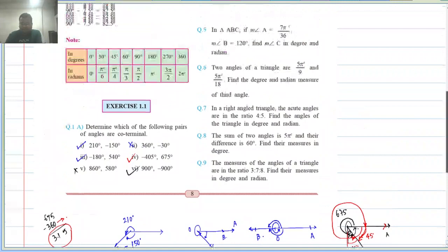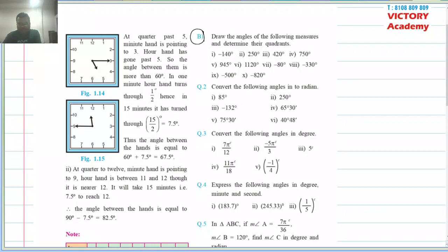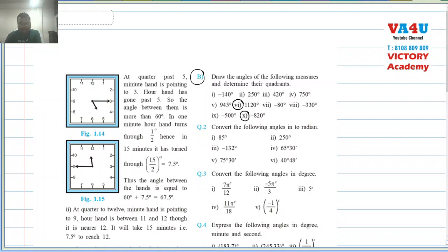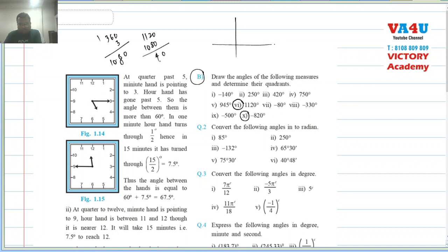Now let us do question B: draw the angles and determine the quadrant. For 1120 degrees: 360 × 3 = 1080, and 1120 minus 1080 = 40. So 1120 degrees is equivalent to 40 degrees after three full rotations. The final arm lies in the first quadrant.